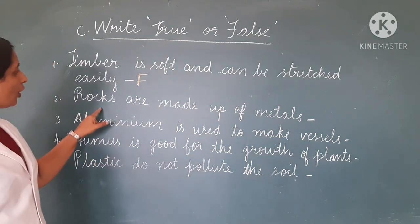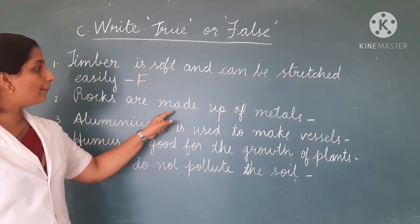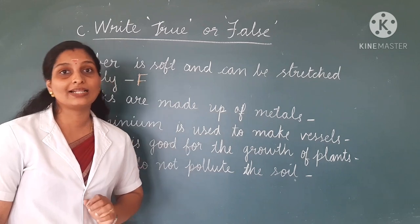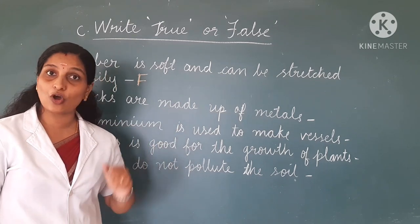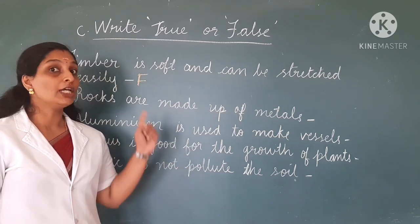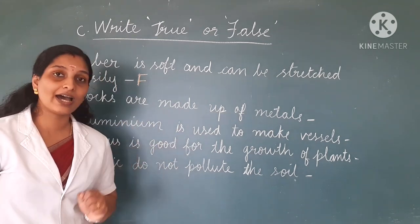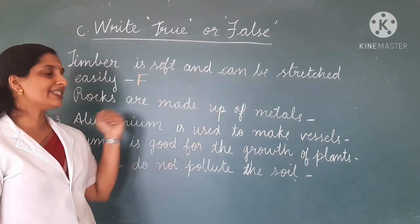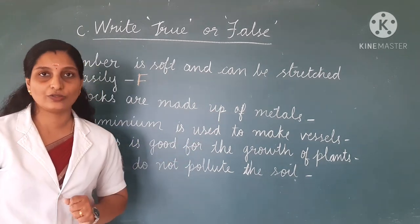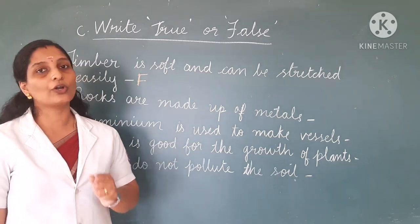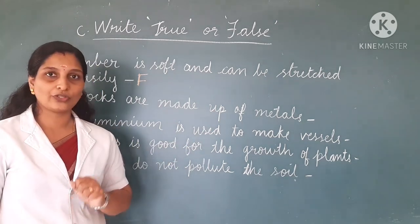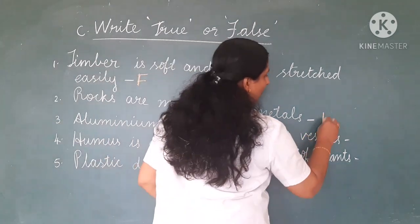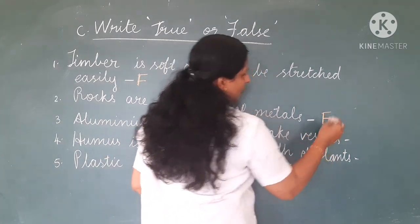Second sentence: rocks are made up of metals. We get metal from rocks, but rocks are made up of minerals. So this sentence is also wrong. You have to put F for false.